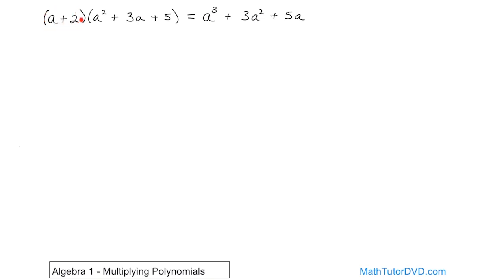Now we turn our attention to positive 2 times a squared, which gives us 2a squared. Then 2 times 3a gives us 6a. Then 2 times 5 is 10. So you see how that works — we're just multiplying everything on the outside times everything on the inside. Now we look for like terms.